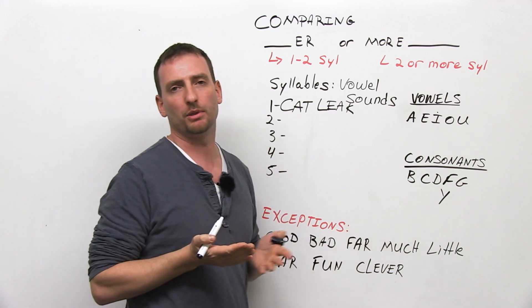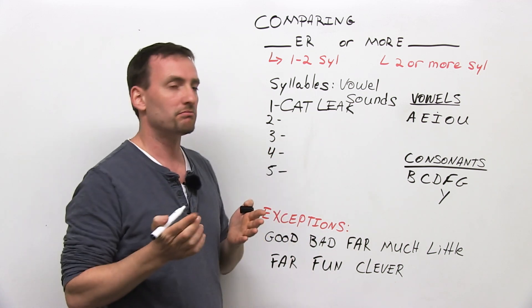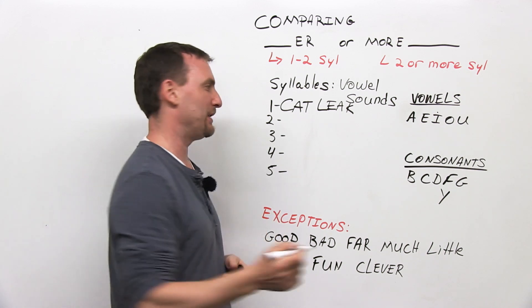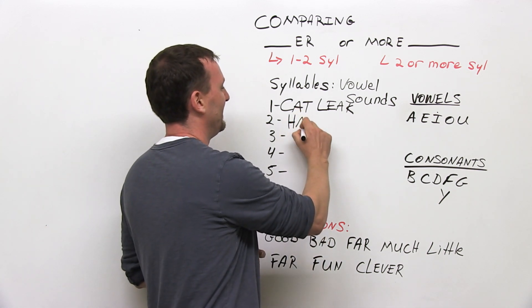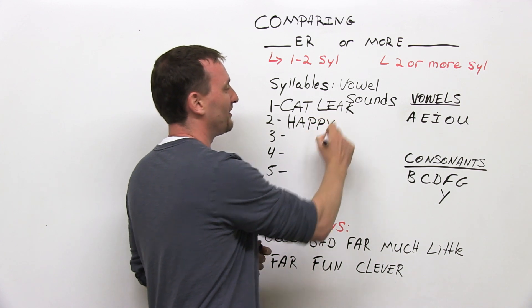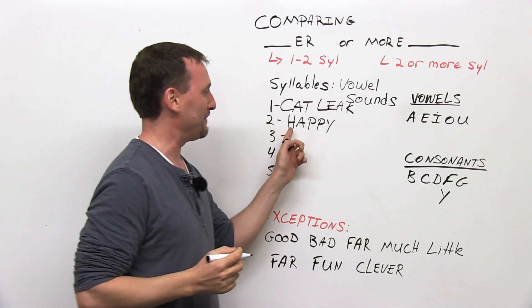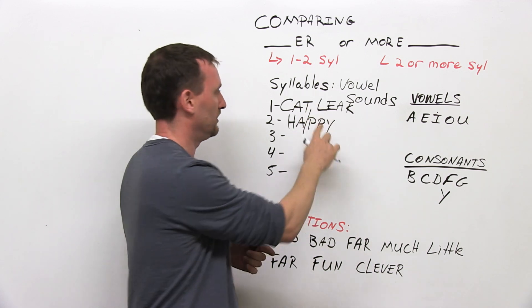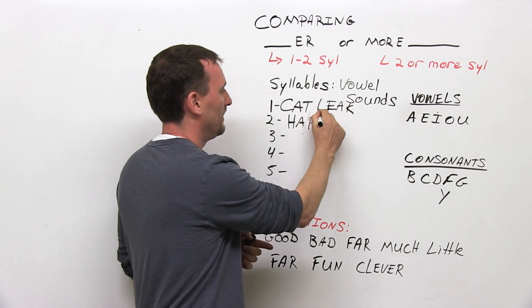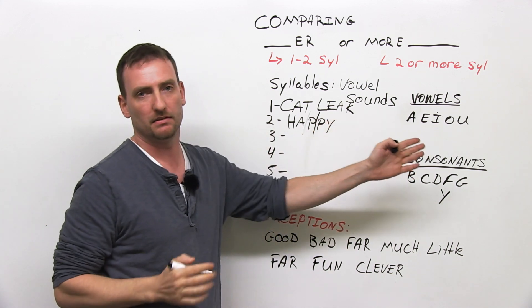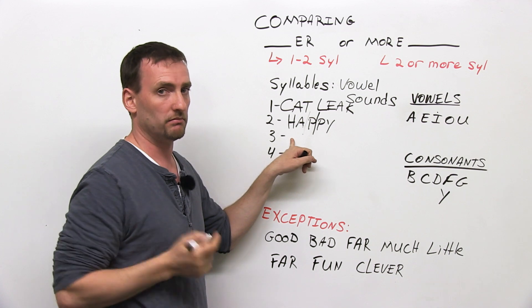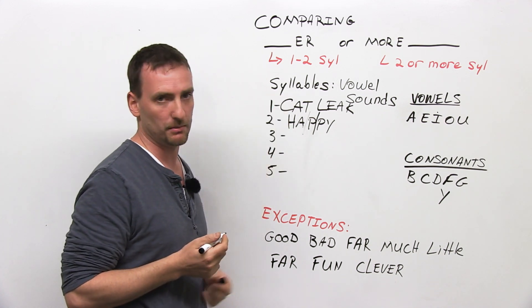Can you think of a two-syllable word? How do you feel right now? I bet you feel happy. I'm sure you feel happy, because you're watching www.engvid.com. Happy. Two vowel sounds. Ha-pi. A-i. How about a three-vowel-sound word? How about three syllables?